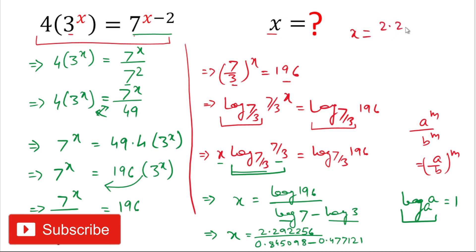x equals in the numerator 2.292256 and in the denominator if we solve it is 0.367977. Therefore the value of x will be 6.229. So friend, here we have calculated the value of x that is equal to 6.229.